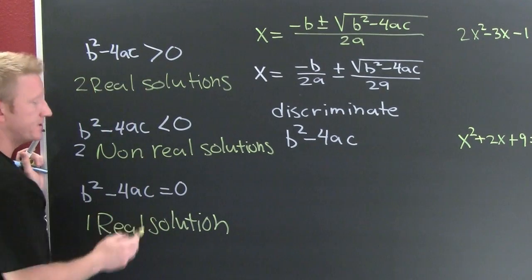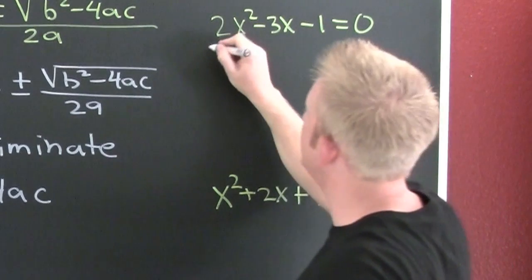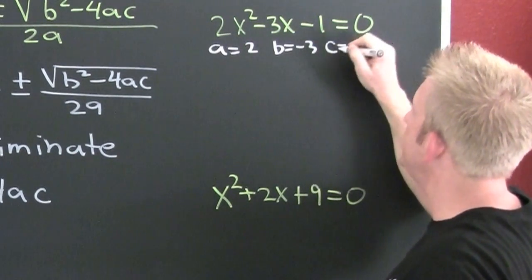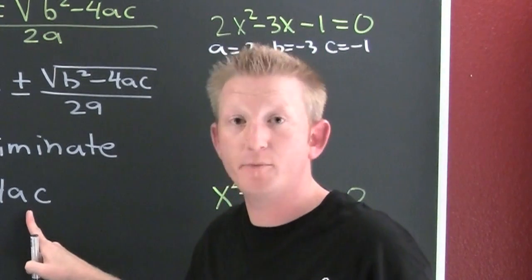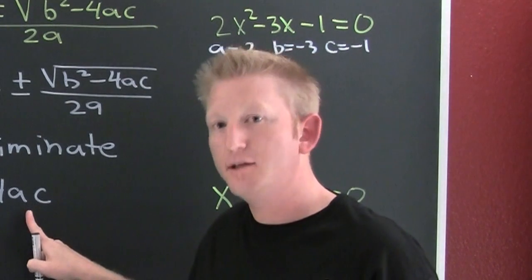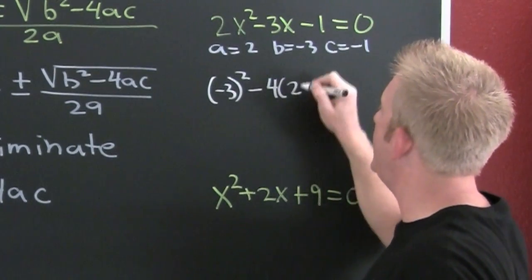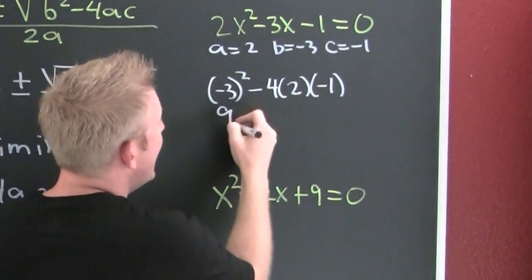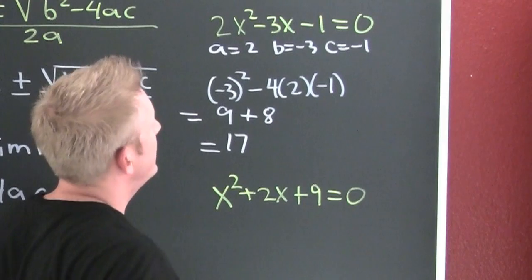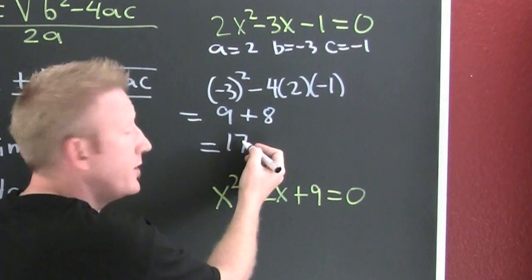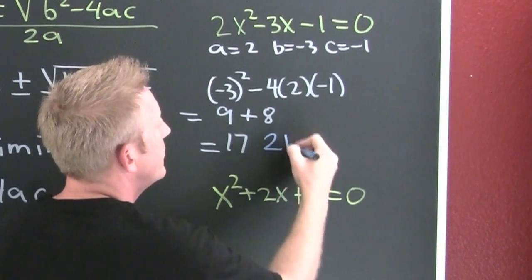Let's go through a couple of examples. In the first example, a is 2, b is negative 3, and c is negative 1. I'm going to plug those into the discriminant — our goal is to determine the number and type of solutions without solving the equation. So b squared minus 4ac gives us 9 plus 8, which equals 17. That's bigger than zero, so by the discriminant, this equation has two real solutions.